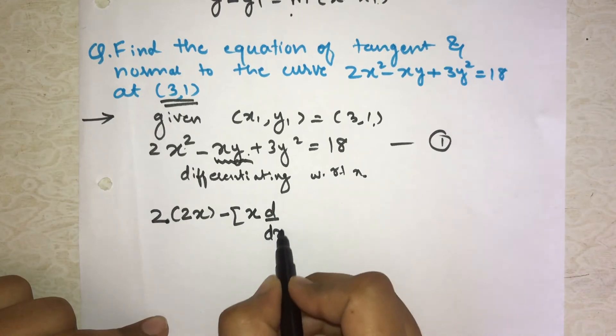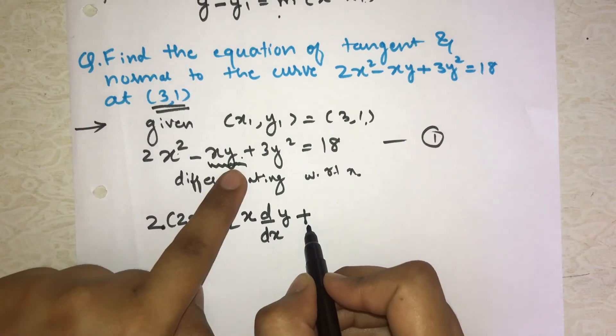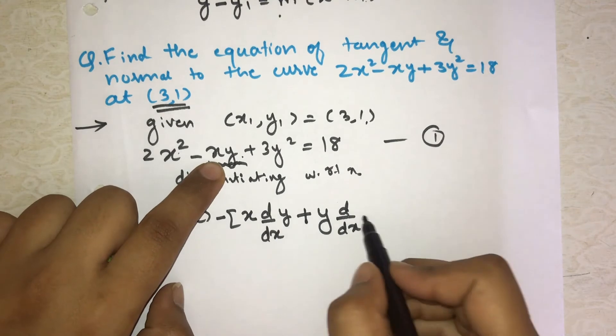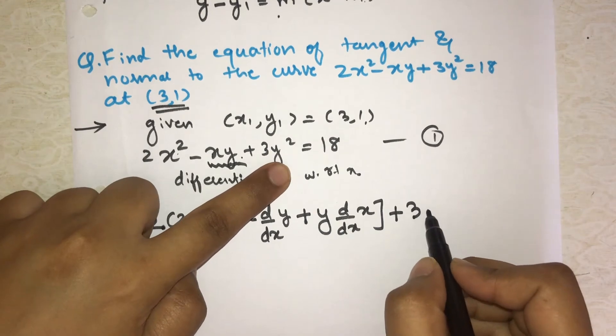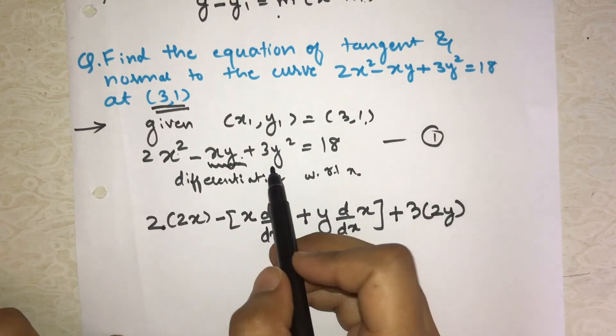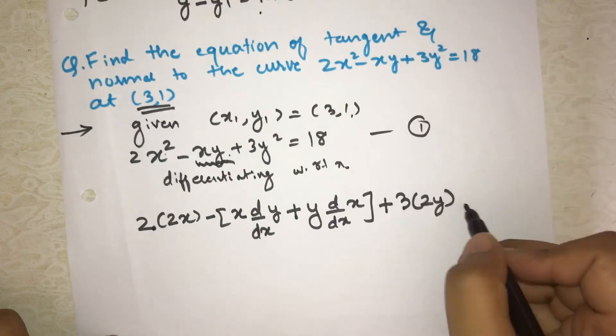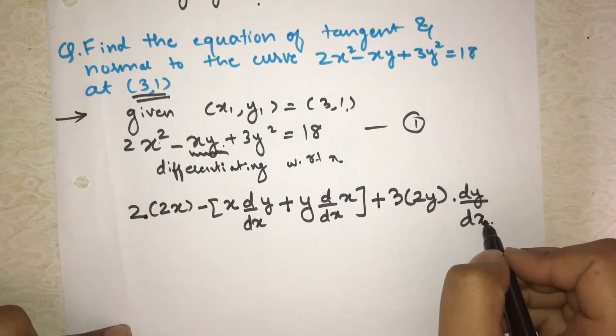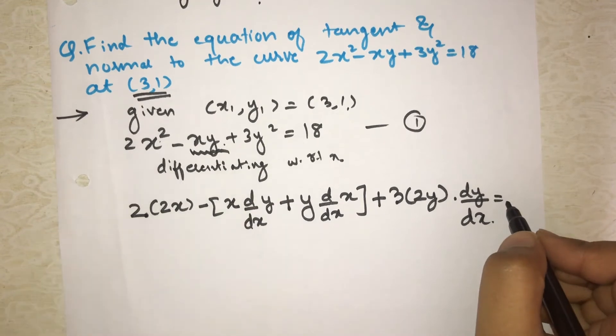So here we have to use product rule for x times y. What is product rule? If x is u and y is v, first we write the first function which is x, then d/dx of second function which is y, then plus, then second function which is y, then d/dx of first function which is x. Then plus as it is, then 3 again as it is.